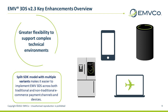EMVCo 3DS version 2.3 introduced enhancements that increase flexibility in optimizing EMVCo 3DS implementation across multiple channels and devices, such as gaming consoles or smart speakers. This helps issuers identify fraudulent transactions more quickly and accurately, and also helps streamline the authentication process for consumers to improve the overall payment experience. One key update is greater flexibility to support complex technical environments with the new 3-layer SDK model with multiple variants, making it easier to implement EMVCo 3DS across both traditional and non-traditional e-commerce payment channels and devices.